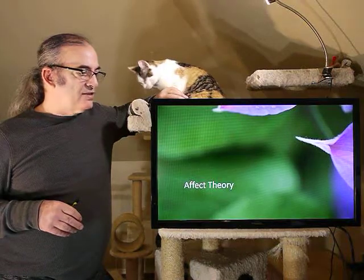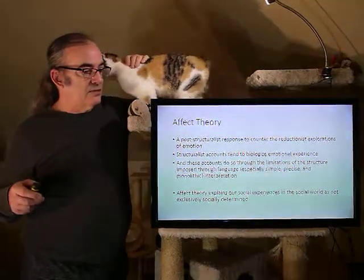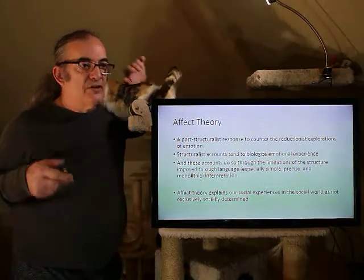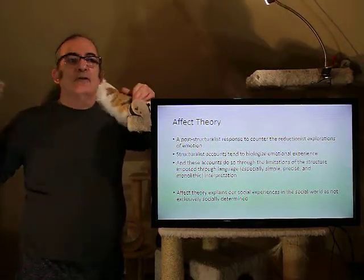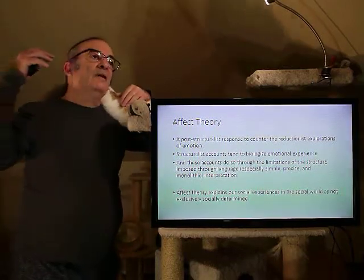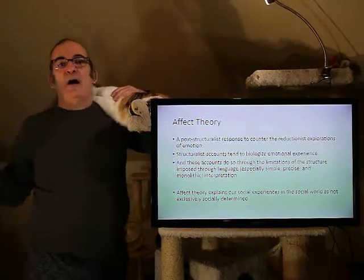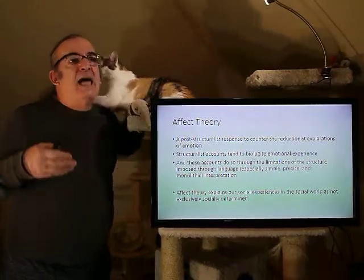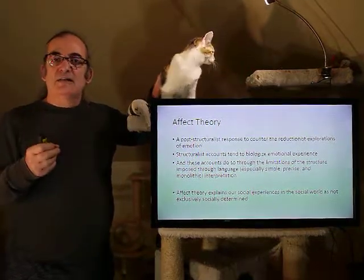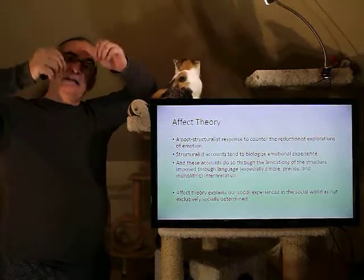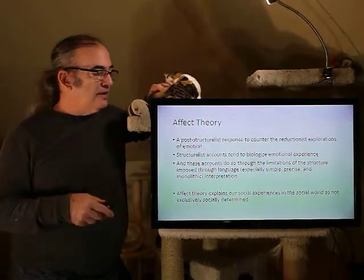Let's move on to affect theory, because it's kind of an extension of this idea. What we have is the post-structuralist response to counter the reductionist explorations of emotion. What we've studied throughout this course is trying to reduce emotion: what caused it, what facial expressions are associated with it, what action tendencies are associated with it, whether to classify it as approach or avoid, or negative versus positive. These are all reductionist ideas — trying to take emotion and tear it down into component parts based on the structure that's been imposed on it.